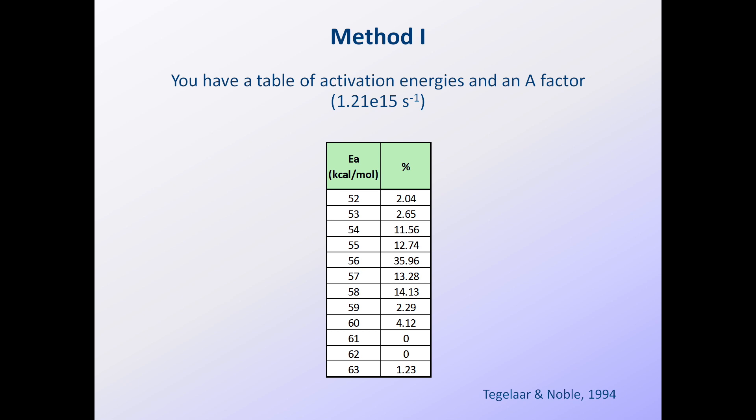In the first method, you only need the original A-factor that you want to change and the original activation energy distribution, as shown here. This method must be used if you don't have the original digital pyrolysis data that were used to generate the original kinetics.